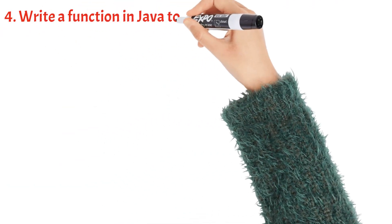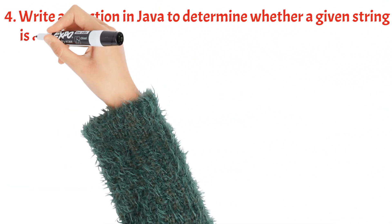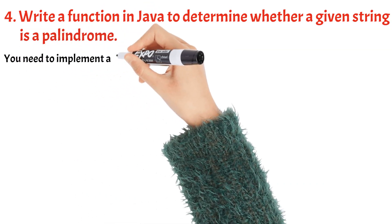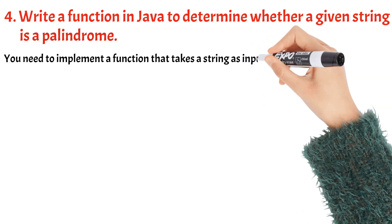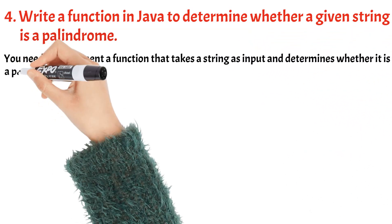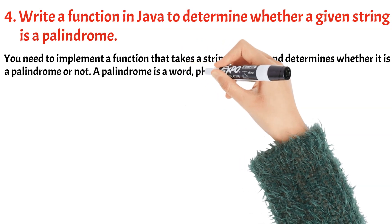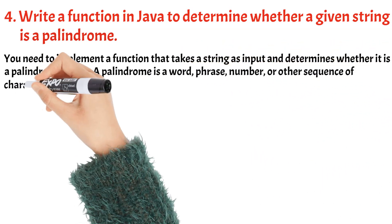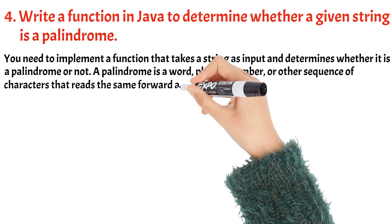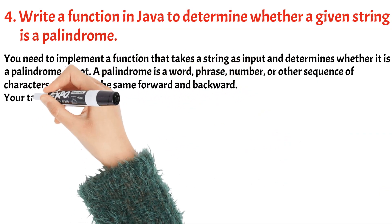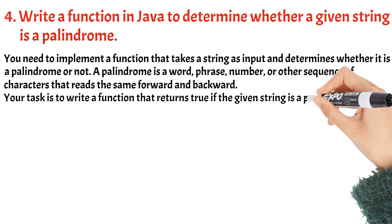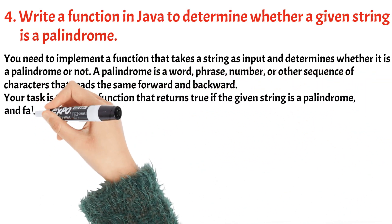Write a function in Java to determine whether a given string is a palindrome. You need to implement a function that takes a string as input and determines whether it is a palindrome or not. A palindrome is a word, phrase, number, or other sequence of characters that reads the same forward and backward. Your task is to write a function that returns true if the given string is a palindrome and false otherwise.